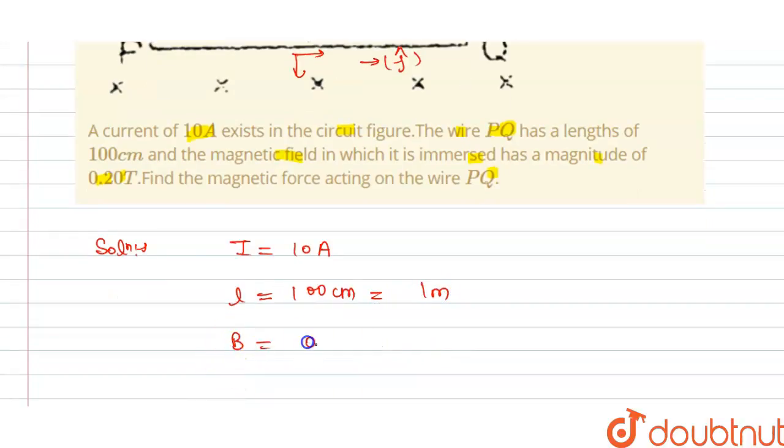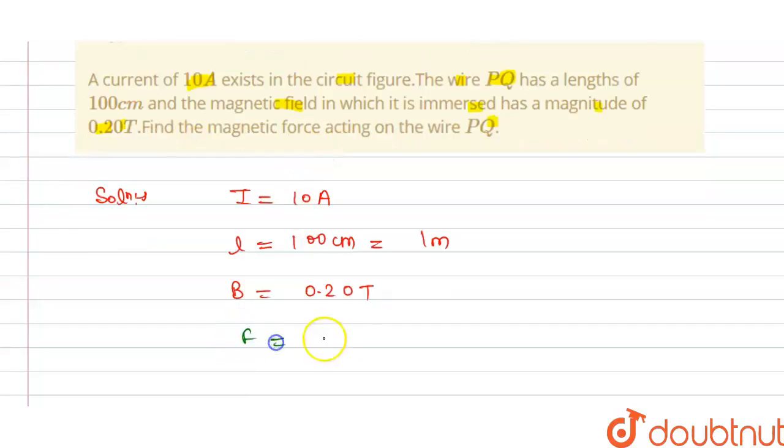The magnetic field B = 0.20 tesla. We have the force is equal to magnetic field times current times length.